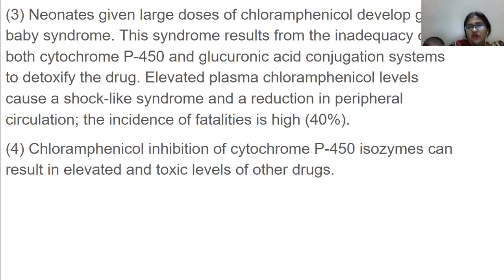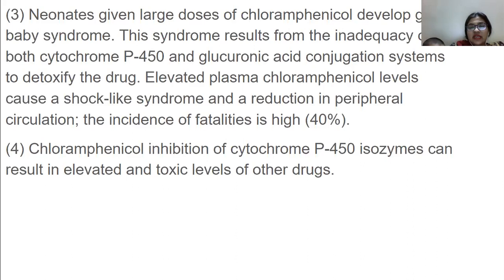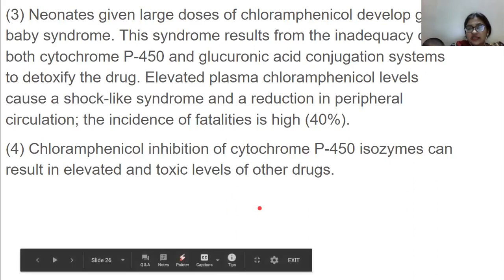Gray baby syndrome results from the inadequacy of both cytochrome P450 and glucuronic acid conjugation systems to detoxify the drug. Elevated plasma chloramphenicol levels cause a shock-like syndrome and a reduction in peripheral circulation; the incidence of fatalities is 40%. Chloramphenicol inhibition of cytochrome P450 isozymes can also result in elevated and toxic effects of other drugs.